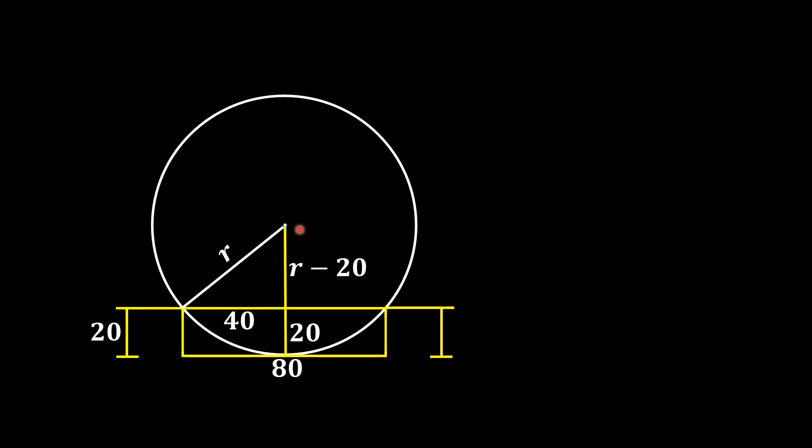We also draw this line segment, which is equal to the radius of the circle. Now, for this right triangle, we apply the Pythagorean theorem. From here, we have r² = (r - 20)² + 40².